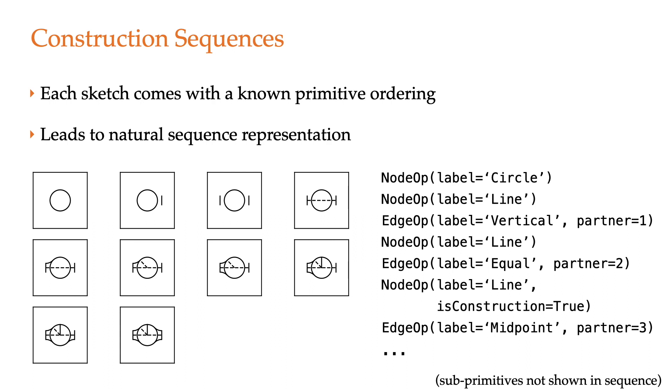We also have access to the order in which primitives were added to a sketch by the designer, admitting a natural sequence representation of the constraint graphs. This can be useful for certain settings like autoregressive modeling.